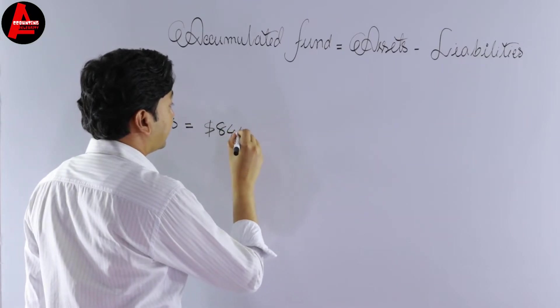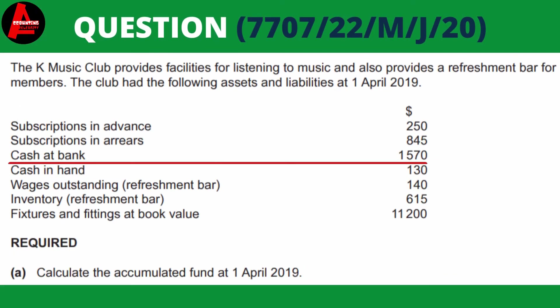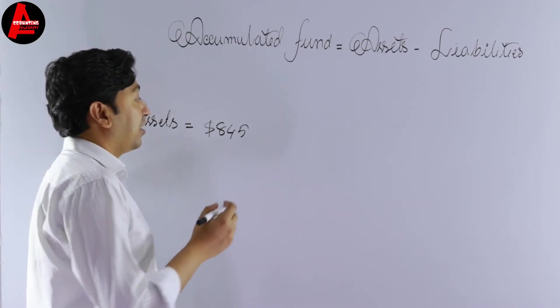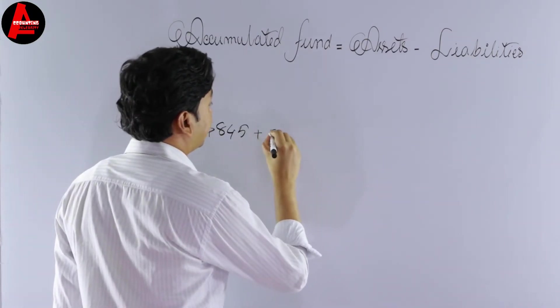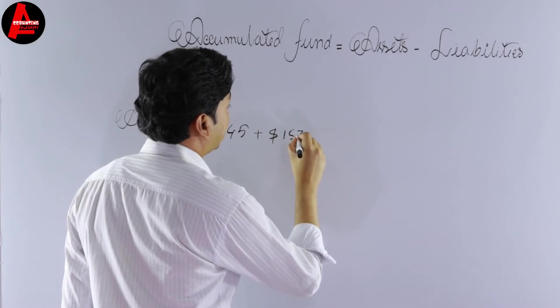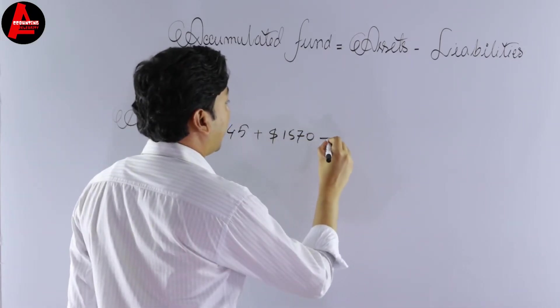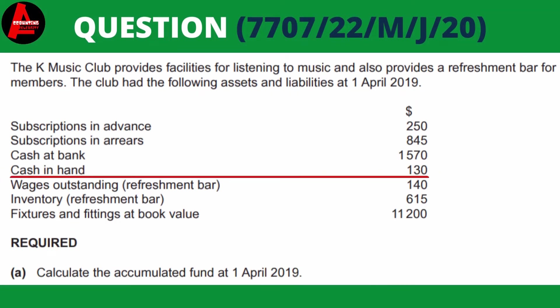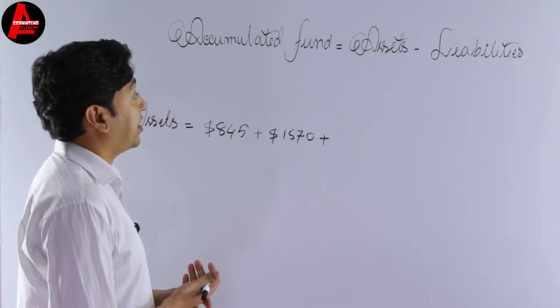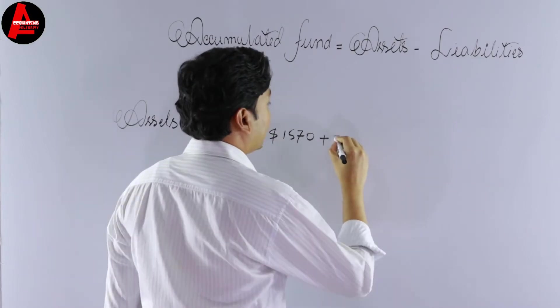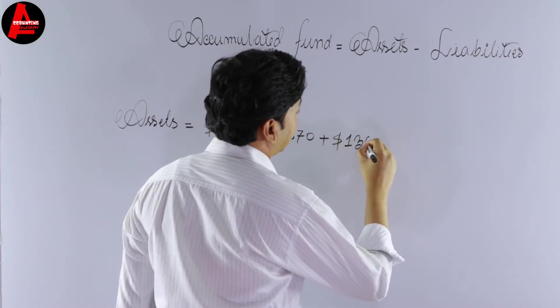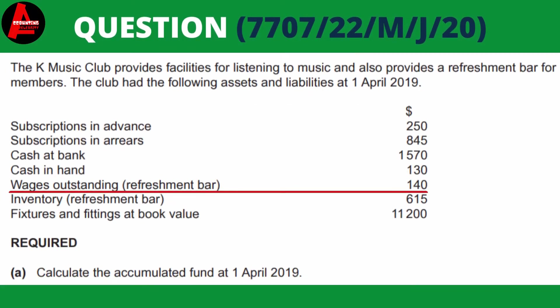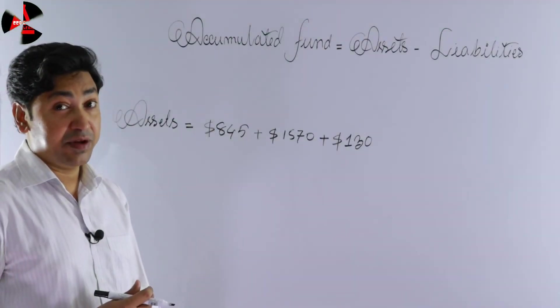Next we have cash at bank: $1,570 — yes, it is an asset, so we write $1,570. Then we have cash in hand: $130 — it is also an asset, so we add $130. Then wages outstanding: $140 — this is not an asset, it is a liability.